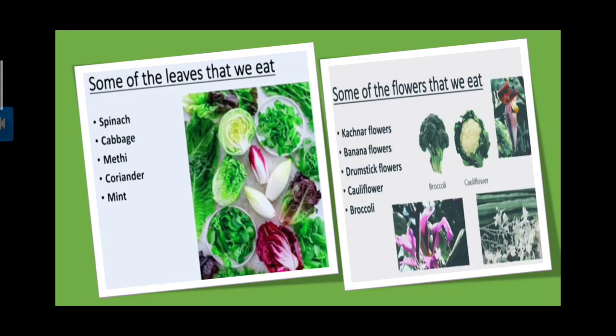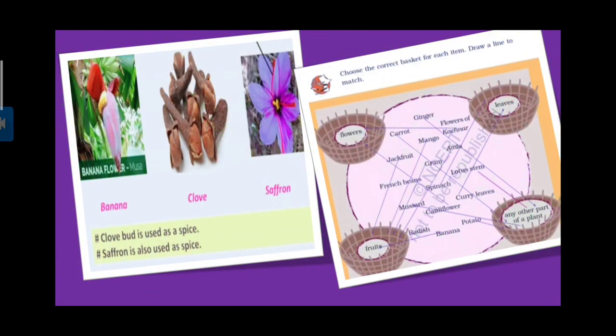We use some of the flowers. Some of the flowers that we eat, for example kachnaar flowers, banana flowers, drumstick flowers, cauliflower, broccoli. Now this is a picture of banana flower, clove and saffron. Clove bud is used as a spice and saffron is also used as spice. Here four baskets: flower, leaf, fruit, any other part of a plant mentioned and in the center different food items.